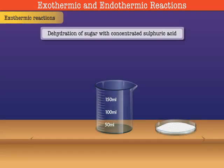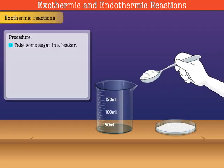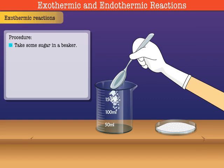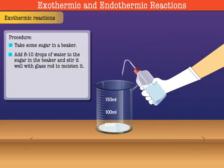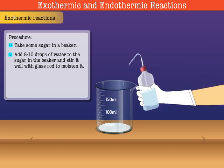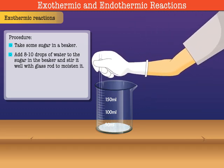Let us watch this dramatic example of an exothermic reaction: the dehydration of sugar with concentrated sulfuric acid. Let us take some sugar in a beaker. Add 8 to 10 drops of water to the sugar in the beaker and stir it well with a glass rod to moisten it.